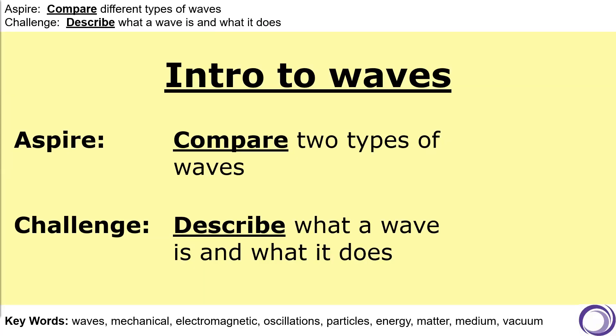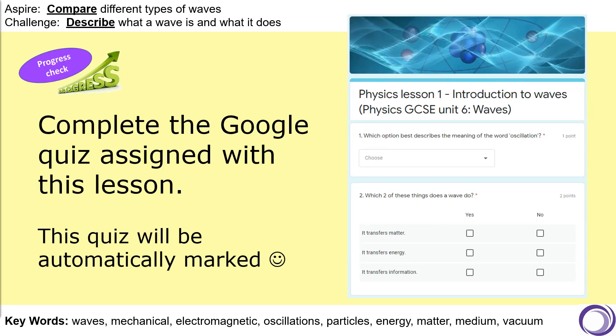Well done for making it this far — you have nearly finished this lesson. In the second part of the lesson we learned to compare the two different types of waves: mechanical waves and electromagnetic waves. You should now be able to tell me for both of these how they are produced, how they travel, what the similarities are, and the differences between them. To finish off this lesson, I'd like you to complete the Google quiz that was assigned with this video. This is a really good way to check your progress and it will only take about five minutes. The quiz will be automatically marked, which means you will get your score and feedback straight away. Good luck, and well done again for finishing the lesson.